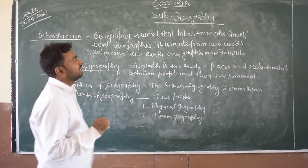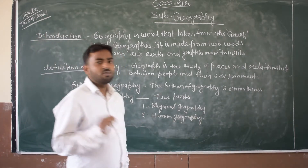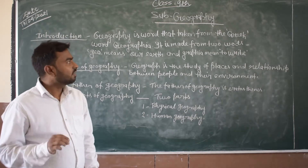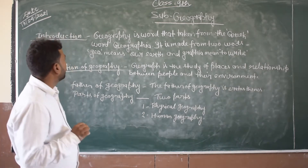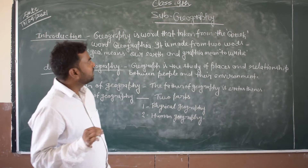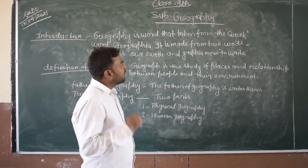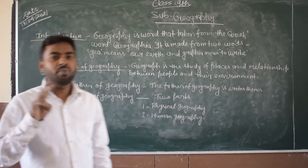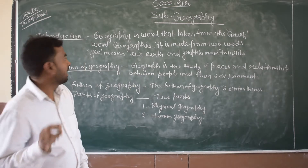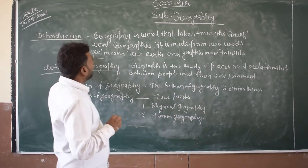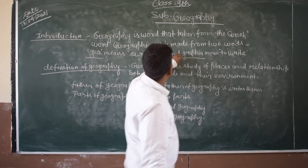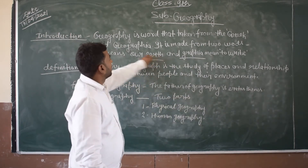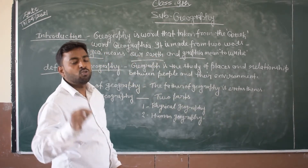Geography is a word taken from the Greek language. It is made from two words: first is Geo and second is Graphia. The meaning of Geo is our Earth, and Graphia means to write.